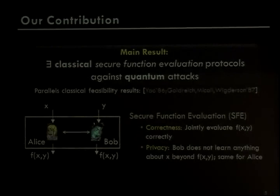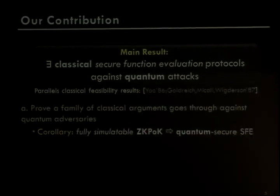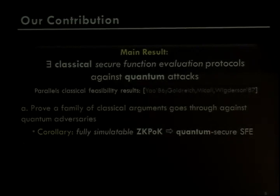Let me quickly remind you what secure function evaluation is. We have two parties, Alice and Bob, with secret inputs x and y respectively. They want to evaluate function f without revealing their secret inputs to the other party. Our result says that you can securely evaluate any efficiently computable function f, even if Alice or Bob is a quantum adversary. There are two steps towards our main result. First, we show a family of classical arguments goes through against quantum adversaries. Applying to existing work, we have that fully simulatable zero-knowledge proof of knowledge is sufficient to construct quantum secure SFE protocols.